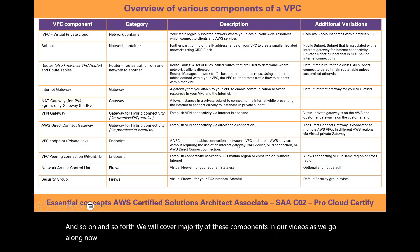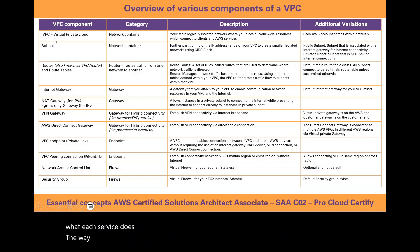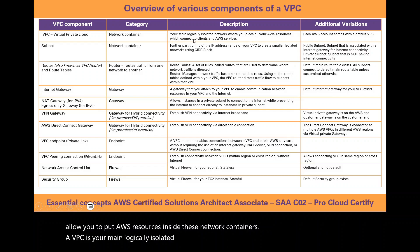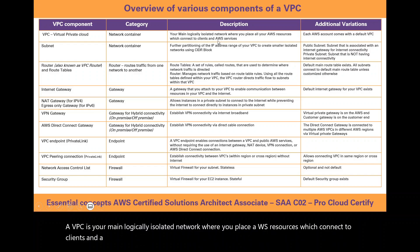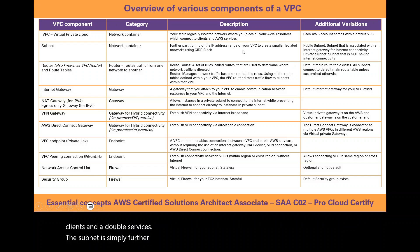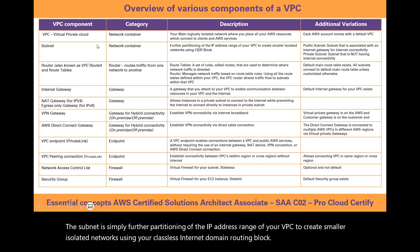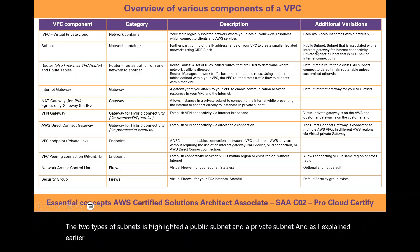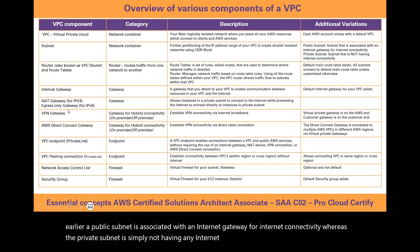These components are further classified in a table to give you a better overview of what each service does. A VPC and a subnet are like network containers, allowing you to put your AWS resources inside them. A VPC is your main logically isolated network where you place all your AWS resources. A public subnet is associated with an internet gateway for internet connectivity, whereas a private subnet does not have any internet connectivity unless associated with a NAT gateway or Direct Connect.